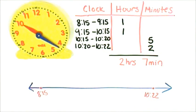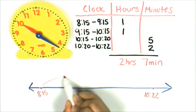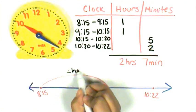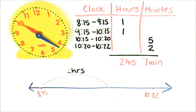Now I will jump forward from 8:15 to 10:22 to see how much time has passed. From 8:15 I'll jump two hours. Two hours is 9:15 is one, 10:15 is two.